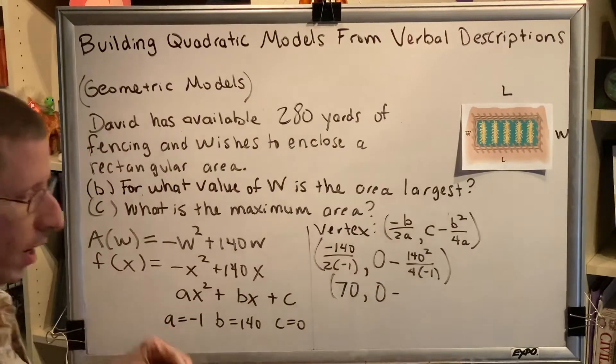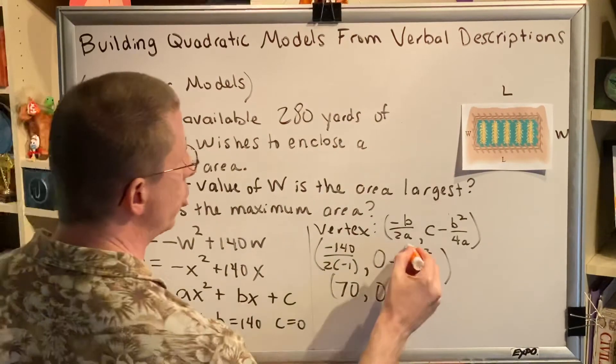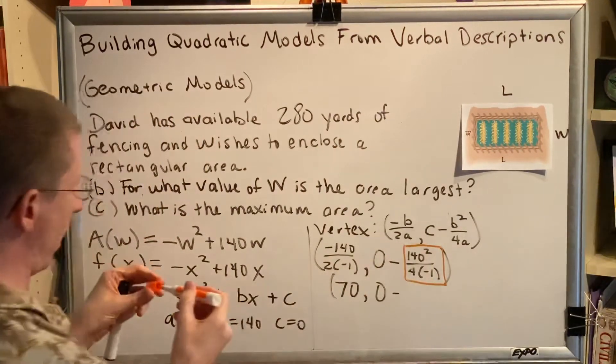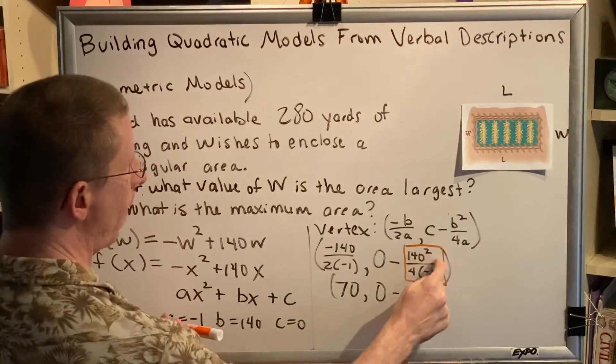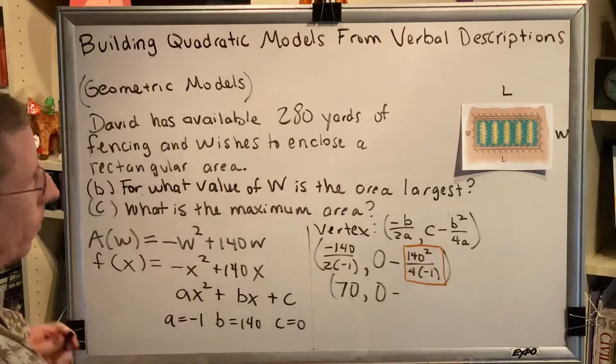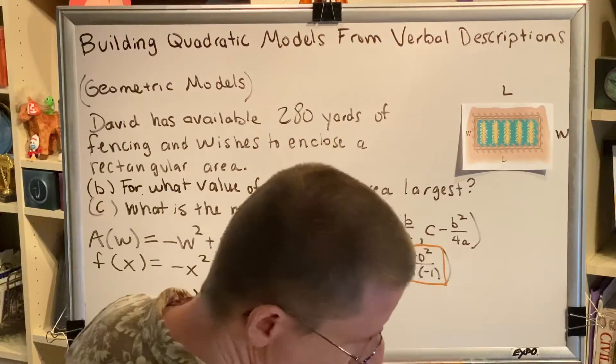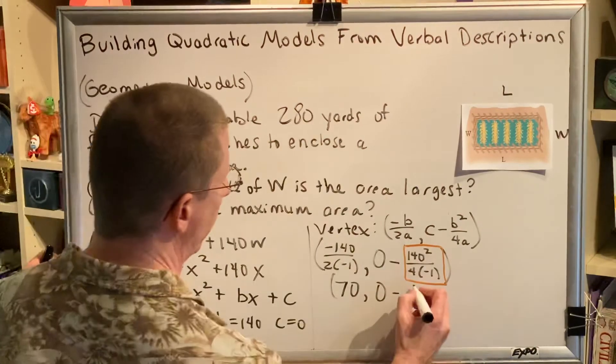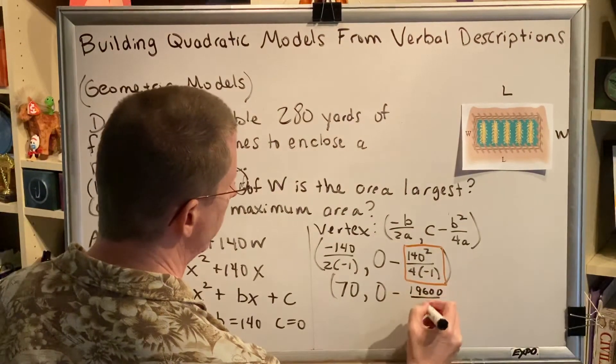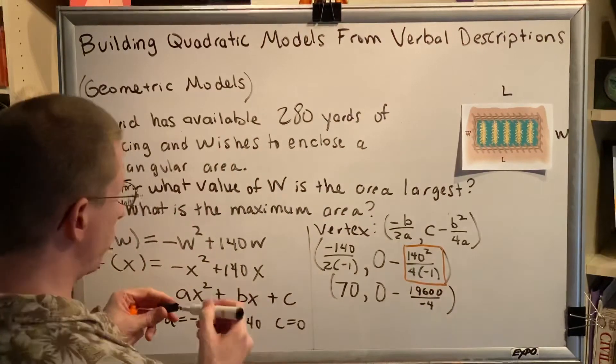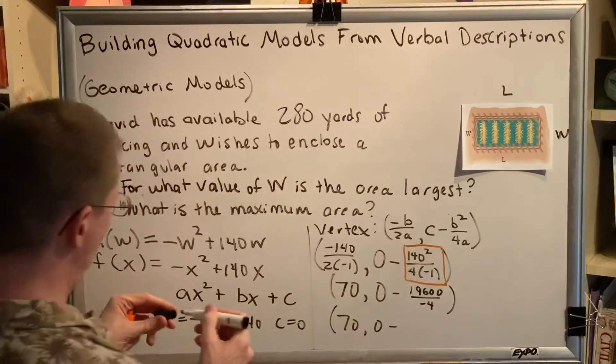Over here for the Y coordinate, we're going to remember a piece of advice from a different video which said that you should do the fraction before the subtraction. Completely ignore this subtraction sign until you have a value for this fraction. So, 140 squared, put that on a calculator, 19,600. 4 times negative 1 is negative 4.